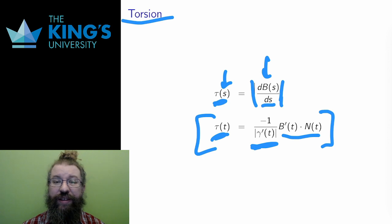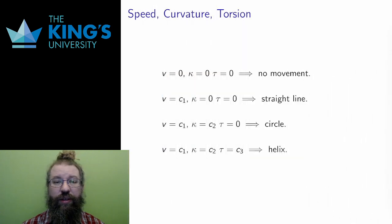I've defined a great deal in these videos. The notes summarized all these definitions for easy access, but here is just a list. There's the tangent, the length of the tangent which is the speed, the unit tangent, the derivative of the unit tangent, the curvature, the normal, the binormal, and the torsion. There's a bunch of vectors and a bunch of scalars, but all put together, they describe movement in space.